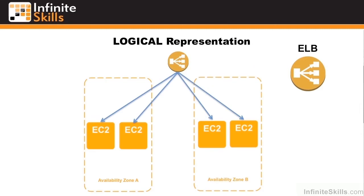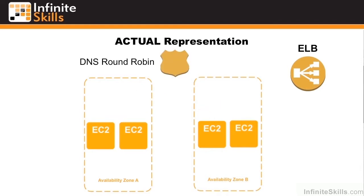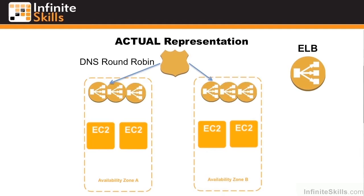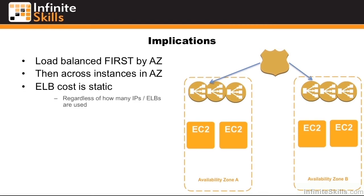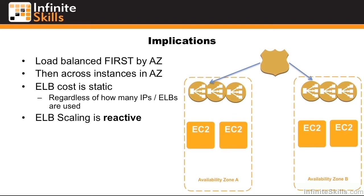Logically, you always want to think of an ELB as a single ELB balancing across many EC2 instances. But what actually happens is DNS round-robin across many ELBs in each independent availability zone. Remember that load is balanced first by the AZ, and then across instances in the AZ. The ELB cost is always static regardless of how many IPs or ELBs are actually used, but ELB scaling is always reactive — it's always going to be a bit behind the curve.